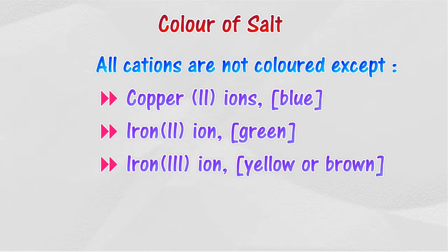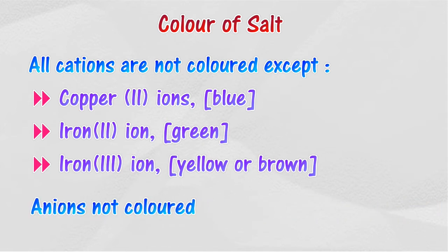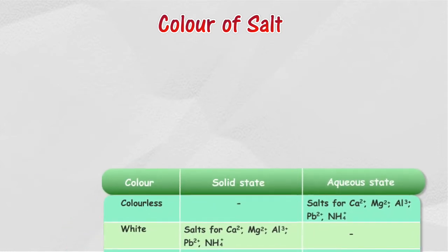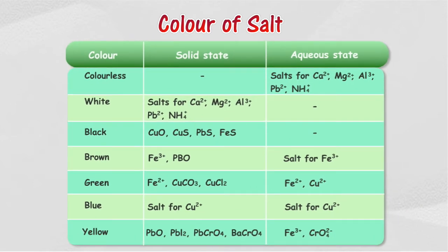The color of a solid or solution of certain salts enables inferences to be formed on the type of cation and anion that may be present in the salt. All cations are not colored except copper(II) ions, which are blue; iron(II) ions, which are green; and iron(III) ions, which are yellow or brown. None of the anions are colored. The following table shows the color of salts in solid and aqueous state for several types of salts.